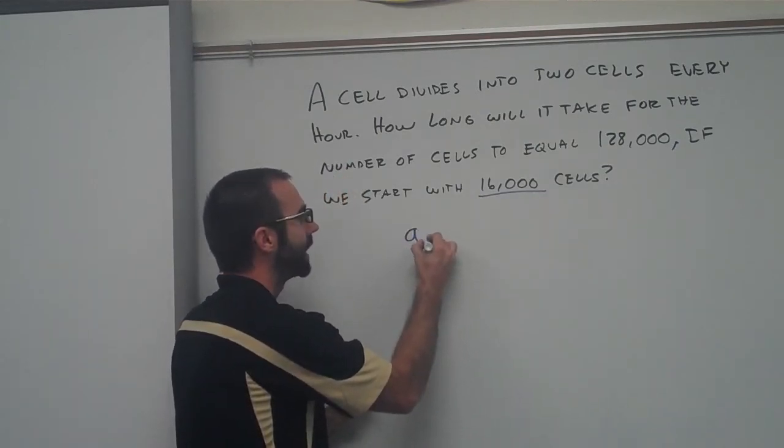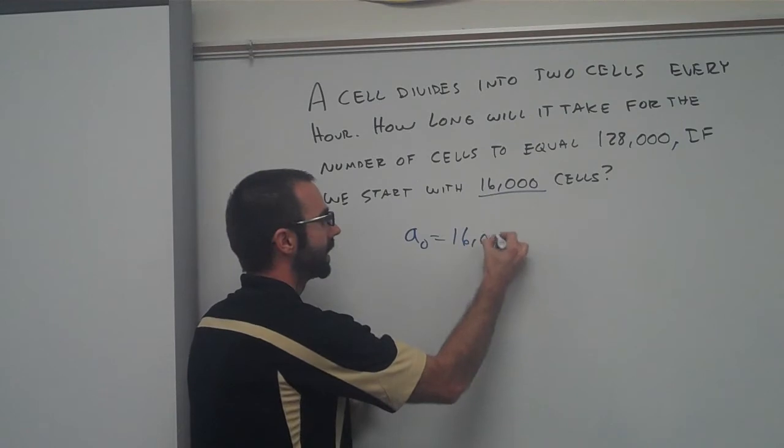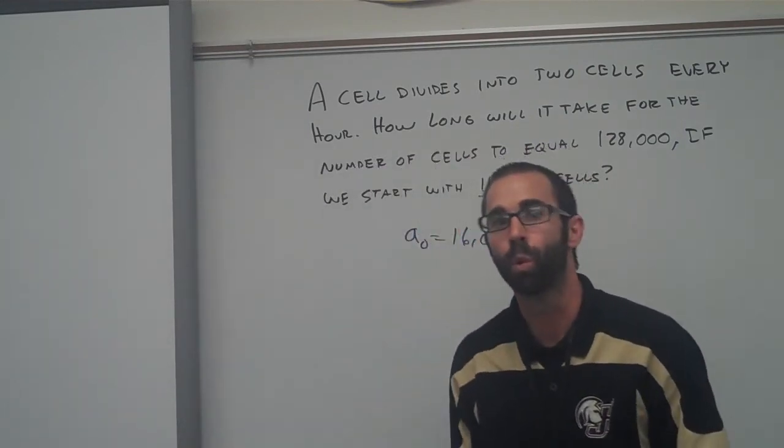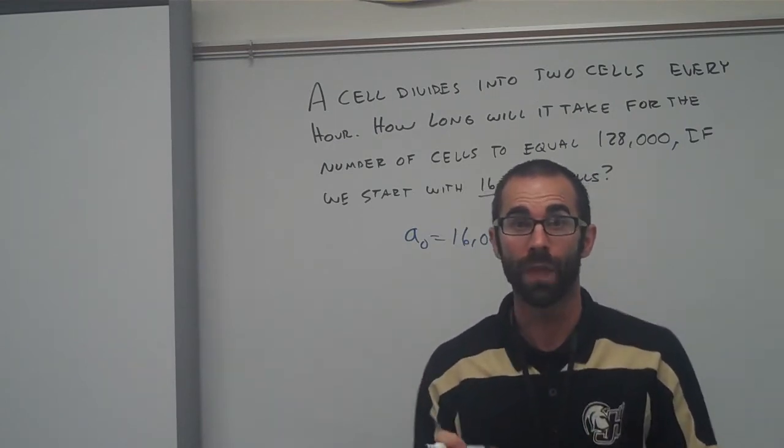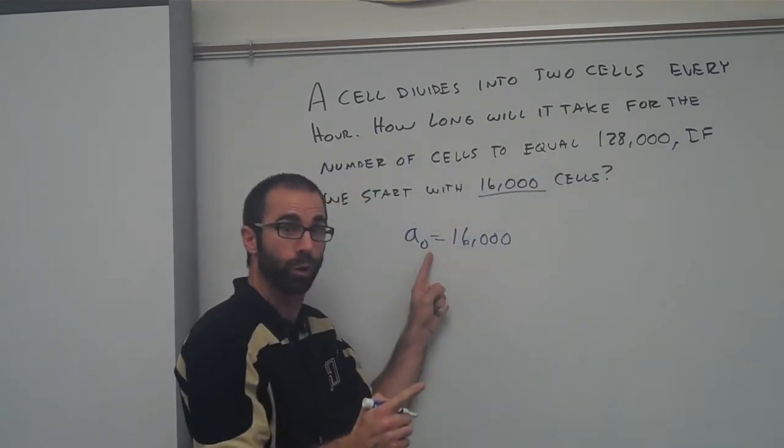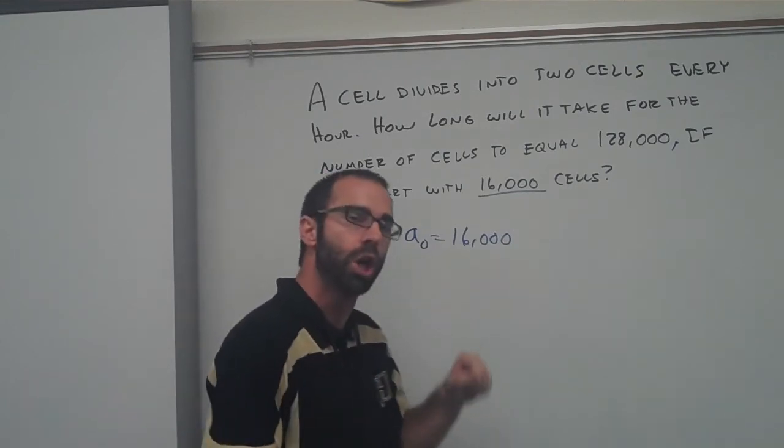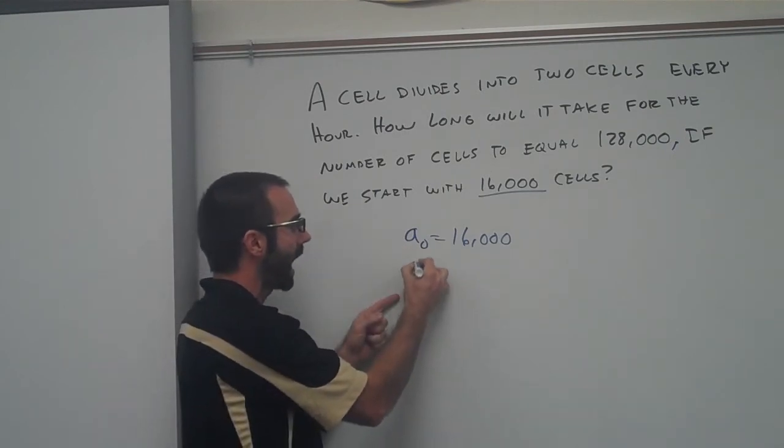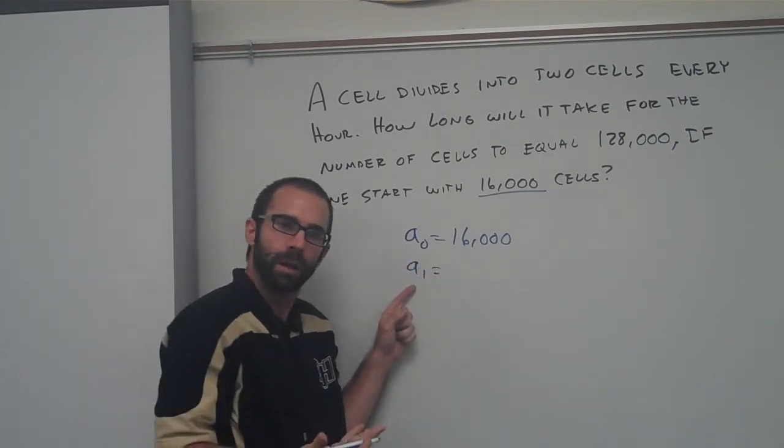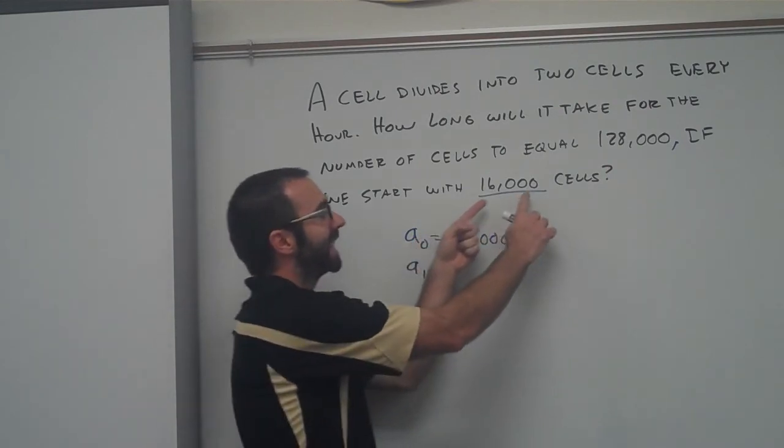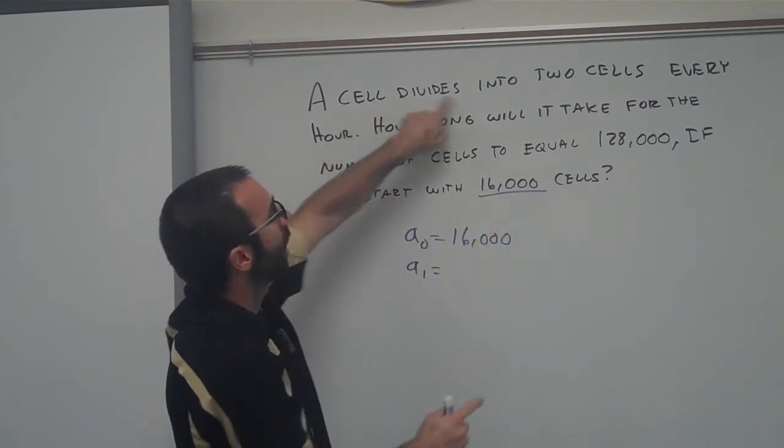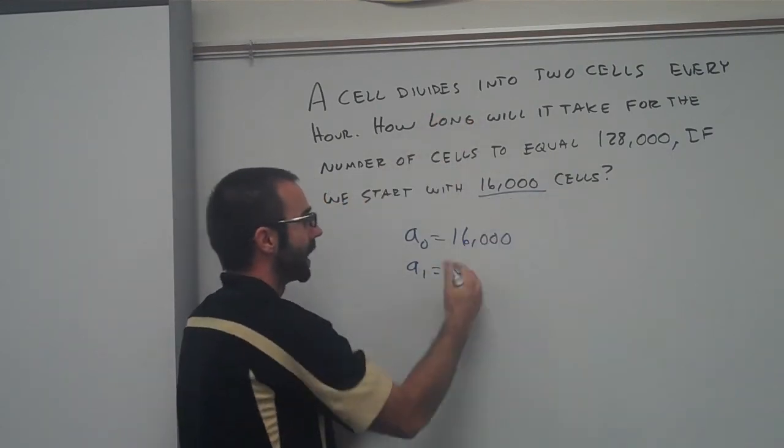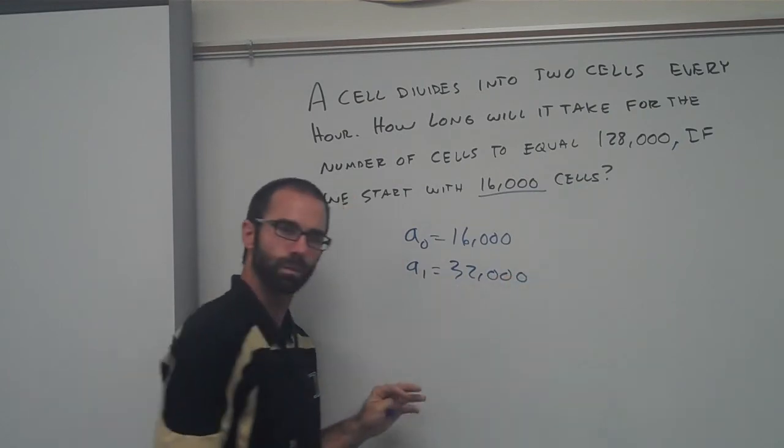It would seem that right here we would have 16,000 cells. So I'm going to say A sub zero is 16,000. And one of the mistakes that we were seeing on the exam was most people were putting 16,000 as A sub one. That would mean after the first hour there were 16,000, but that's not the case. At hour zero, you're starting with 16,000. So after 60 minutes goes by, now it's an hour, how many would you have then? Well, you would take your 16,000 and every cell would cut in half or double. So we're going to double this and then you're going to have 32,000.